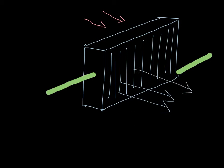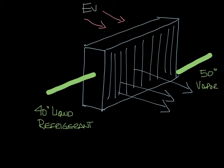This transfer of heat from the air to the refrigerant lowers the temperature of the air so that it can be delivered to the occupied space for cooling. It also causes the refrigerant to evaporate. You have 40 degree liquid refrigerant going into your evaporator and after the air passes through and the heat transfer happens, it comes out as a 50 degree vapor. So this is your evaporator.